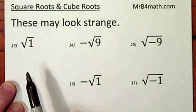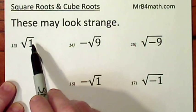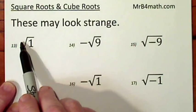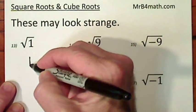I'd like to go over a few more cases that might look strange. The square root of 1. Remember, there's no index here. So it's understood to be an index of 2, which means the square root. The square root of 1 is simply 1.